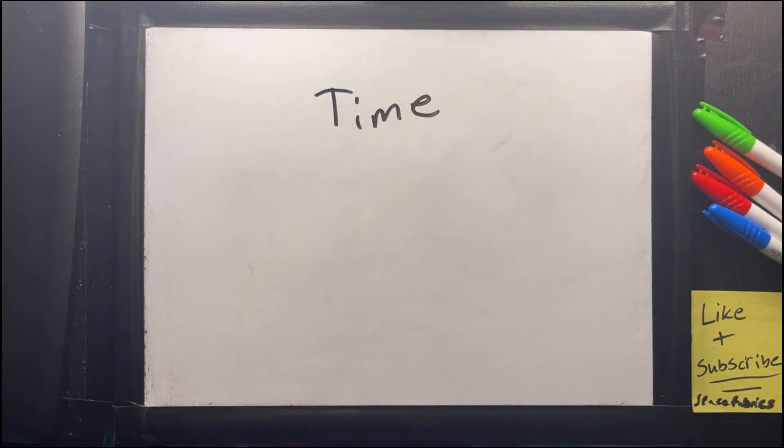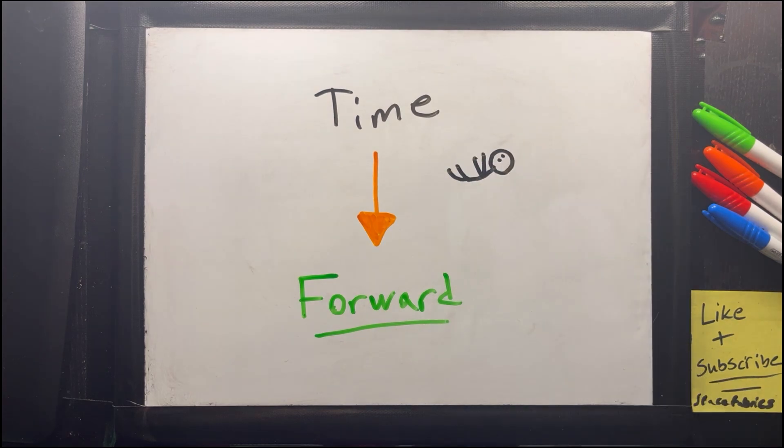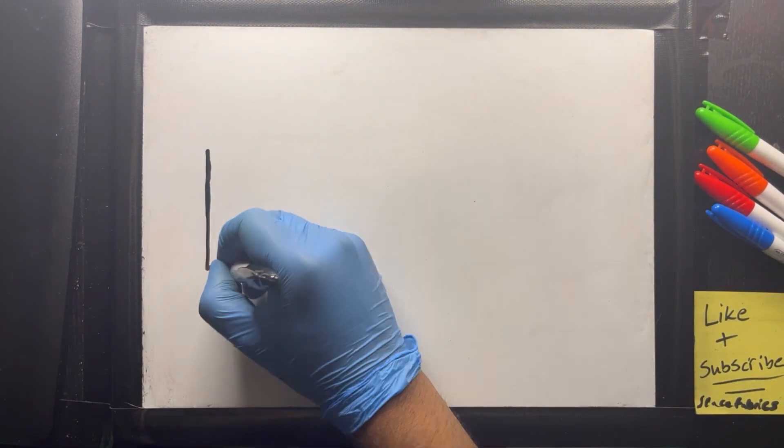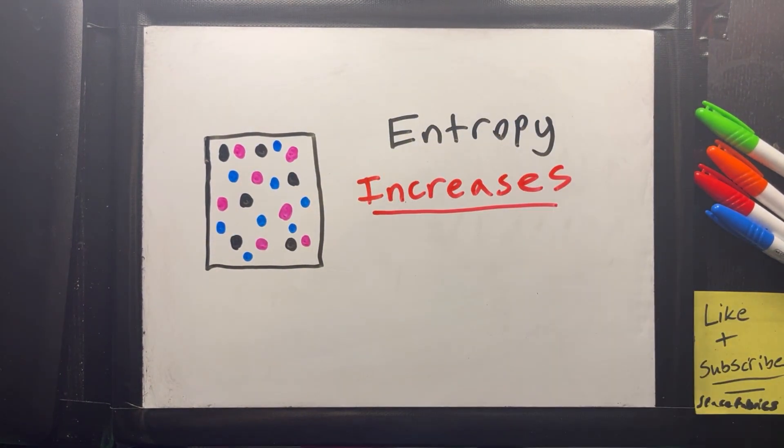The second problem is relativity. Time has a direction, and we experience it moving forward because of the second law of thermodynamics. This law states that in any closed system, entropy or disorder tends to increase over time.